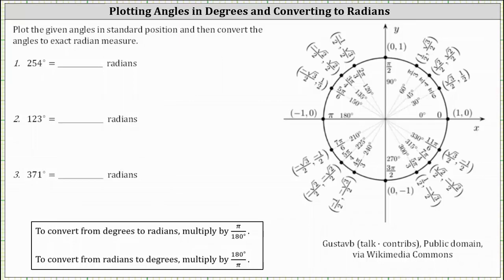For number one, we have 254 degrees. Let's begin by plotting the angle in standard position. The initial side is along the positive x-axis, and now we rotate 254 degrees counterclockwise. One fourth of a rotation counterclockwise is 90 degrees; a half rotation counterclockwise is 180 degrees. We need to rotate 74 more degrees to reach the terminal side of 254 degrees, which is the terminal side of the angle 254 degrees in standard position.